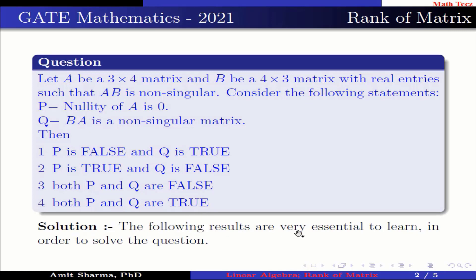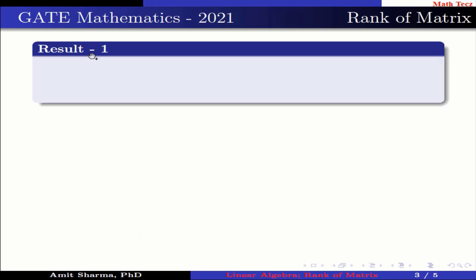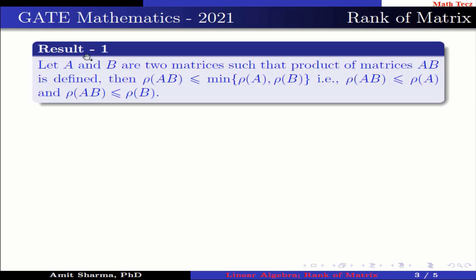The following results are very essential to learn in order to solve this question. Result number 1: let A and B be two matrices such that the product AB is defined. Then rank of AB is less than or equal to minimum of rank of A and rank of B. That is, rank of AB ≤ rank of A and rank of AB ≤ rank of B.